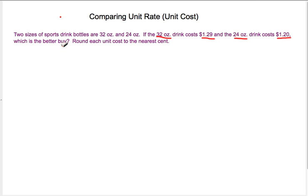So we could say, well, how many ounces do we get per dollar, or how many cents does it cost per ounce? So there's two ways we can think about this. Why don't we try both ways and see what happens? So if we have 32 ounces, for a 32-ounce drink costs $1.29, what is that per dollar?